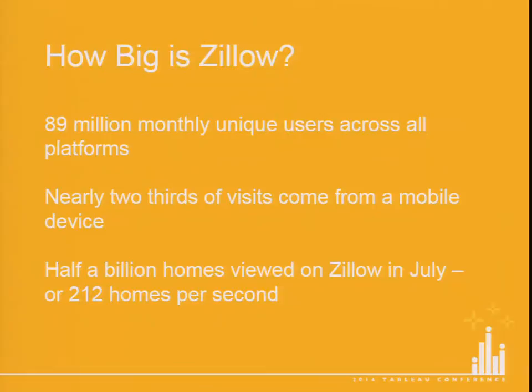Just a little background on how big Zillow is: Zillow is one of the largest real estate websites in the country. In the month of July, we had almost 90 million users come to our website, whether on desktop, mobile app, or mobile web. We're very much a mobile-first company — nearly two thirds of our visits come from a mobile device, and on weekends that's over 70%. Users are looking at homes for sale, for rent, or off the market. In July, over half a billion homes were reviewed on Zillow — that amounts to 212 homes per second.